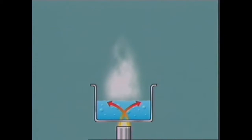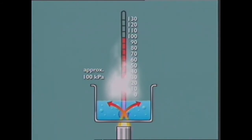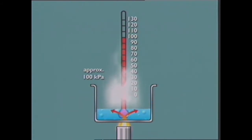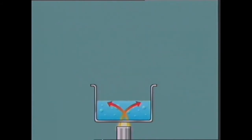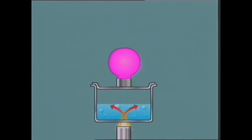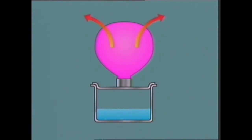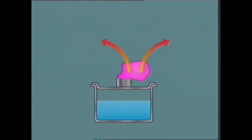For water to boil, heat has to be added continuously to change its state from a liquid to a vapor. At standard atmospheric pressure, while the water is boiling, its temperature remains constant at 100 degrees Celsius until all the liquid has been transformed. If the water vapor is contained and the same amount of heat is removed from it, it will condense back into a liquid.